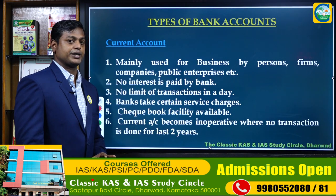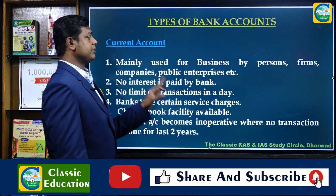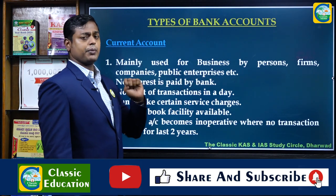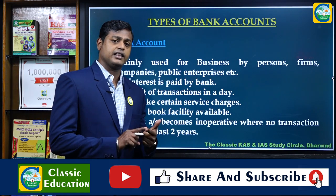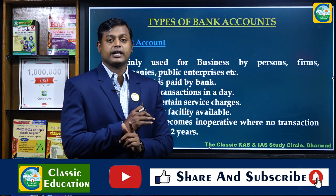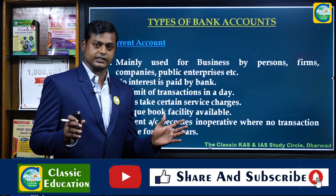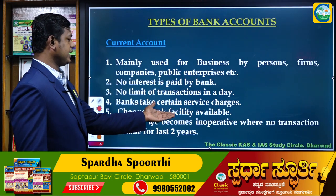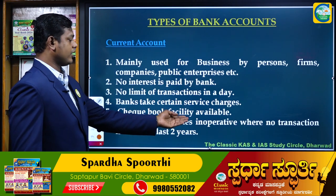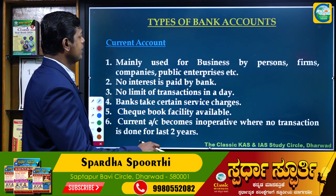So those are the main points about current accounts. Who opens a current account? Business persons, firms, companies, public enterprises, or big institutions. Second: no interest is paid by the bank in this account. Third: no transaction limit. Fourth: checkbook facility is available. And lastly, the account becomes inoperative if no transaction is done for the last two years.